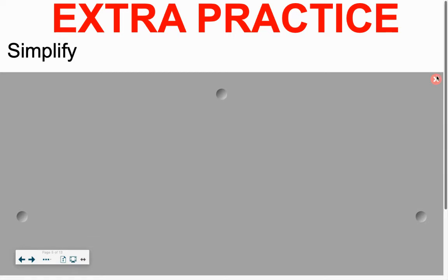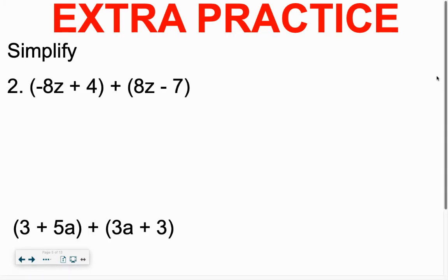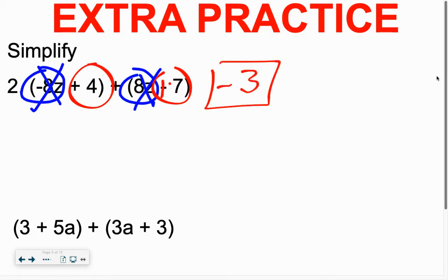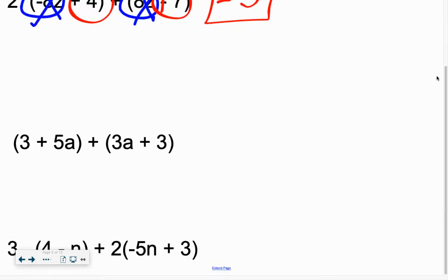Some extra practice — now if there's any subtraction, we say don't subtract, add the opposite. So we're going to fix that right away. Are there any numbers on the outside of the parentheses in this first example? Nope. Well in that case, just pretend like the parentheses aren't there. Add your like terms. A negative 8z and 8z is 0 — they're gone, just cross them off. What's a positive 4 plus a negative 7? The final answer is negative 3.